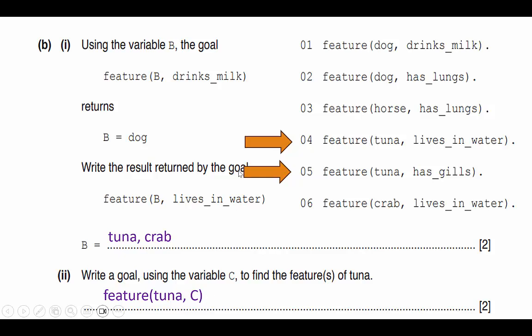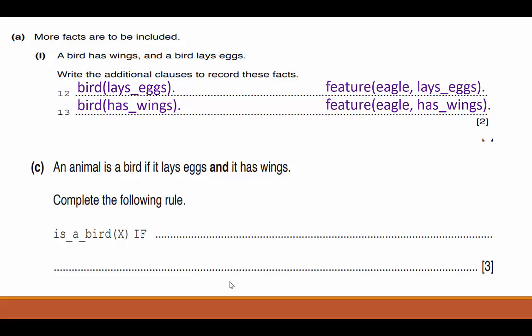They want to do it by the variable C. So all I do is I write feature tuna, comma, capital C, and I make sure it has a capital C. There's no period here because it is not a fact. It is simply a goal. So we write feature tuna C, and we've picked up another two points on our Paper 3 exam. Just giving us free points here.